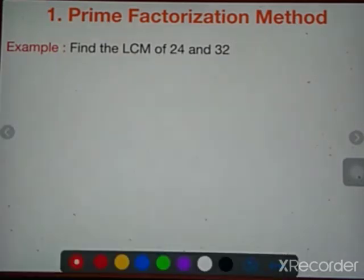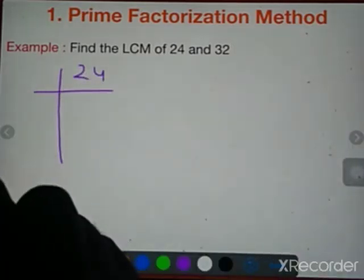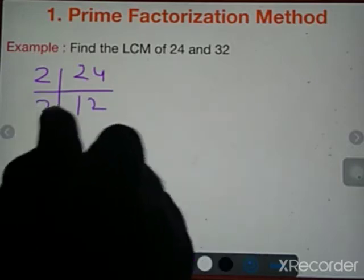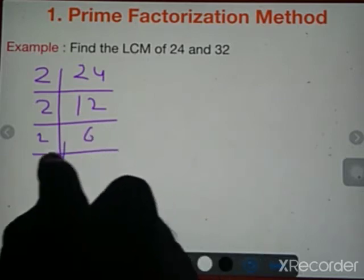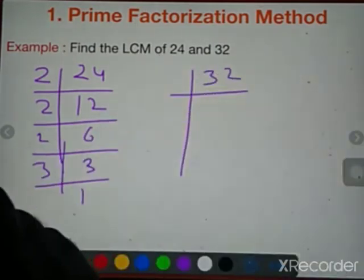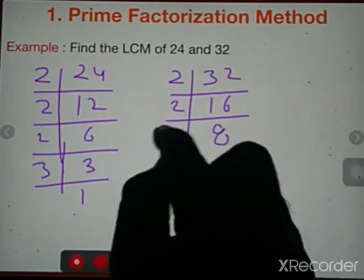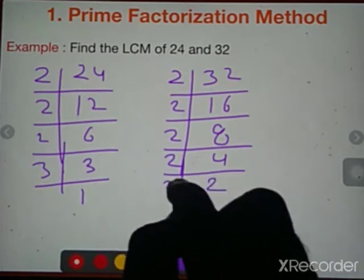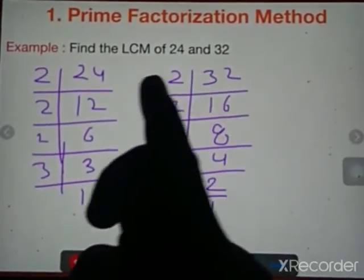Find the LCM of 24 and 32. First, find the prime factorization of 24: divide by 2 to get 12, divide by 2 to get 6, divide by 2 to get 3, then 3 ones are 3. For 32: divide by 2 to get 16, divide by 2 to get 8, divide by 2 to get 4, divide by 2 to get 2, divide by 2 to get 1. So 24 = 2³ × 3 and 32 = 2⁵.